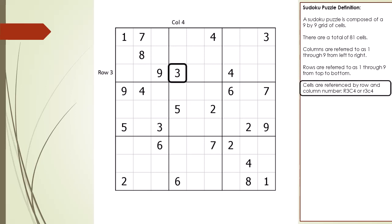In this example, cell R3C4 is currently outlined. Notice the notation we use for referencing a cell — upper or lower case is fine. We use the letters R3C4 to reference row 3 column 4 in the grid. In DX Sudoku videos, I will often say 3,4 instead of R3C4 because it's easier to say.